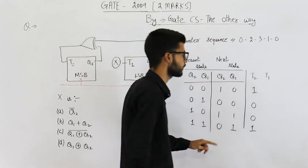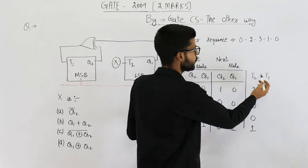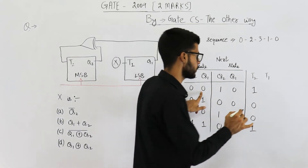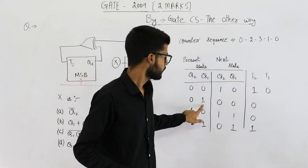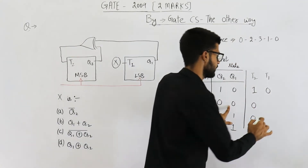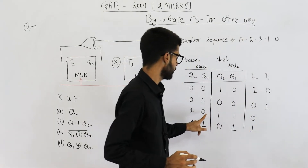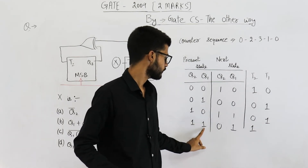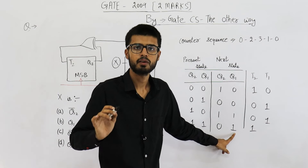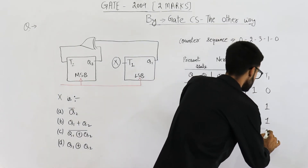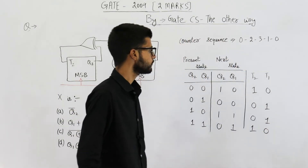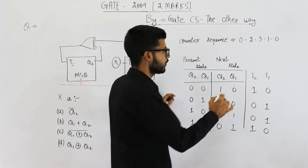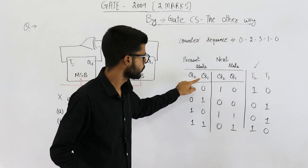Here we actually want to toggle — from 1 the value is becoming 0, so T2 is 1. For T1: from state 0, Q1 remains 0 so we don't want to toggle; from 1 we are going to 0 so we want to toggle, meaning T1 is 1; the next two entries are also 1 and 0, since from 1 the value stays 1. You can see this truth table matches X-NOR, so T2 will be X-NOR of Q2 and Q1.